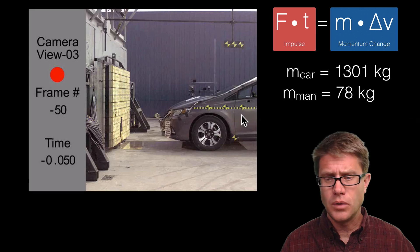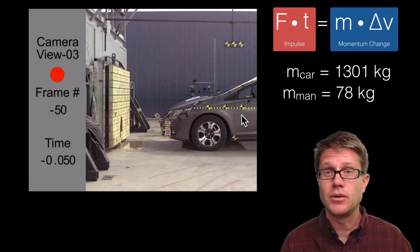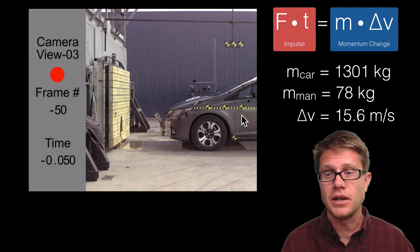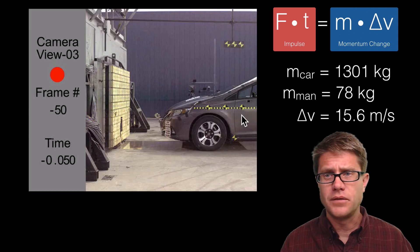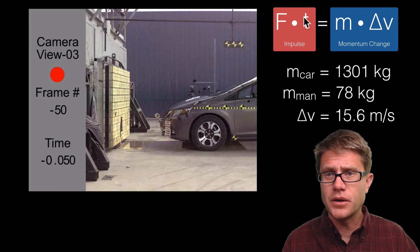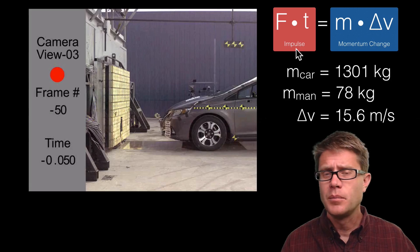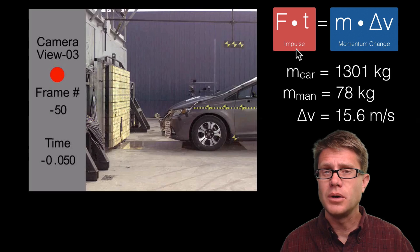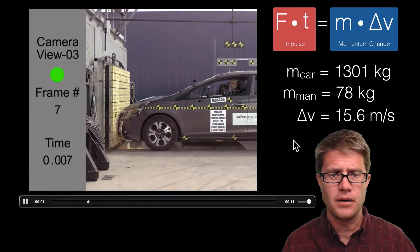We know the car is going at 35 miles an hour and at the end it is going zero, so we have a change in velocity of 15.6 meters per second. We also need to figure out time. The mass and velocity change are enough to find momentum change and impulse, but if we want the force on the car and the crash test dummy, we also need to know the time. Let's watch the video to figure that out.